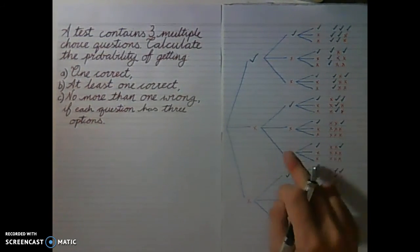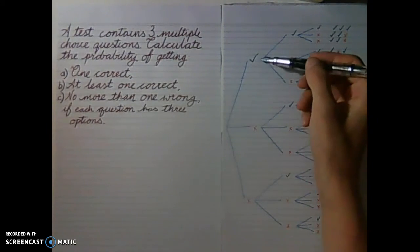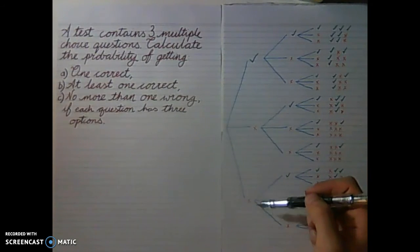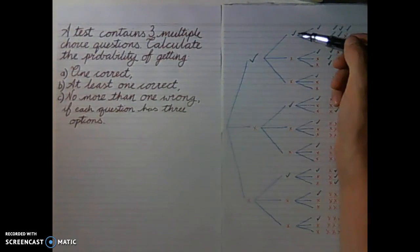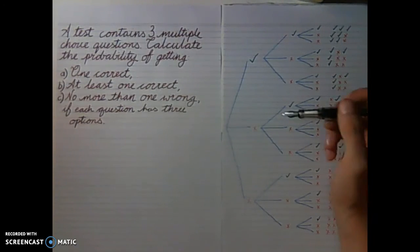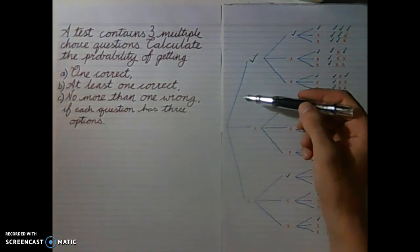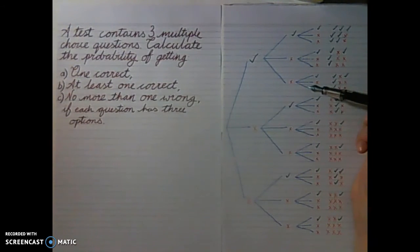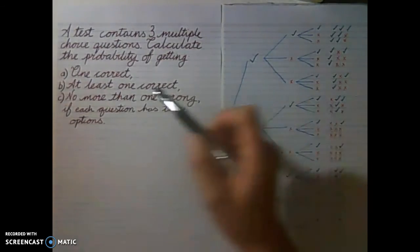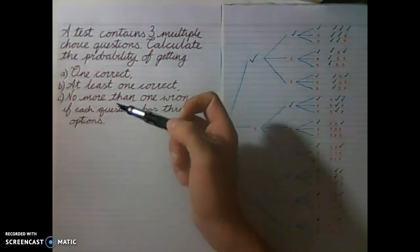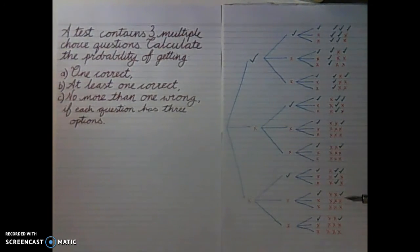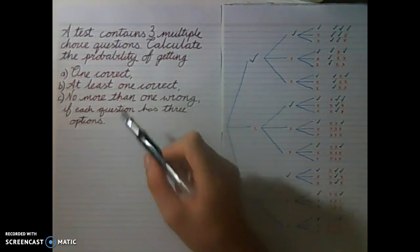I've saved us a bit of time and drawn the tree diagram over here already. Each question we can get correct or incorrect before moving on to the next question with the same possible outcomes. If we have three questions, we need three layers to our tree diagram, each consisting of these three options. Over here on the side I've listed all of the possible outcomes for these various events. This makes these questions rather straightforward, because then working out the probability of each of these is as straightforward as counting which of these outcomes over here fit each of these different possibilities.